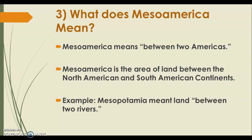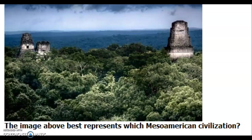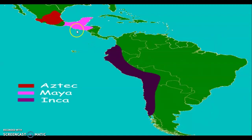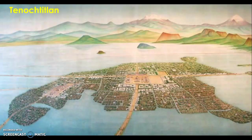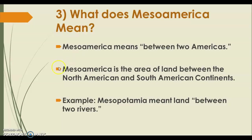What does Mesoamerica mean? Mesoamerica means 'between two Americas.' Looking at the map, the Mayans and Aztecs are between North America to the north and South America to the south. It's similar to Mesopotamia, which meant 'the land between two rivers' — the Tigris and Euphrates. So Mesoamerica is the area of land between the North American and South American continents.